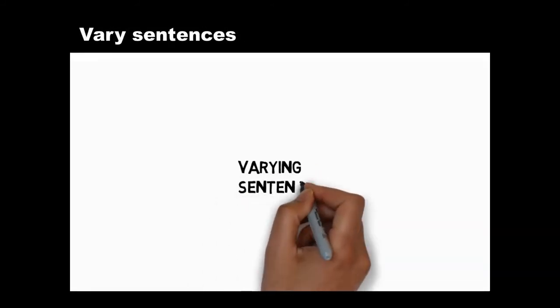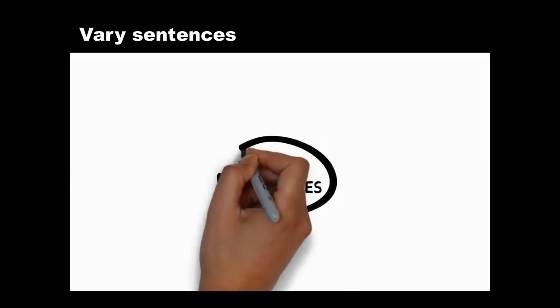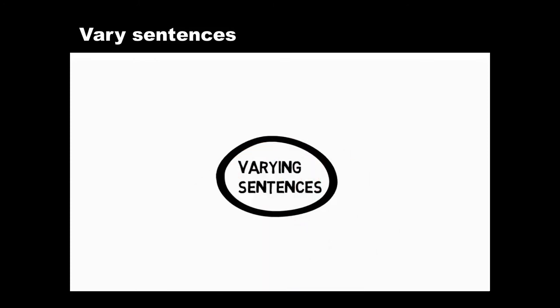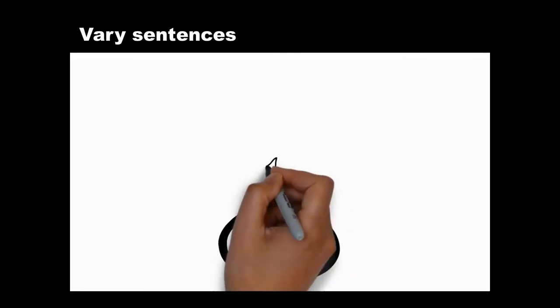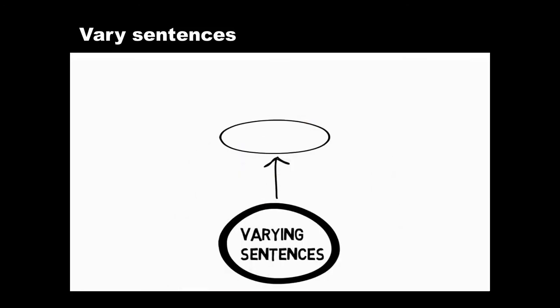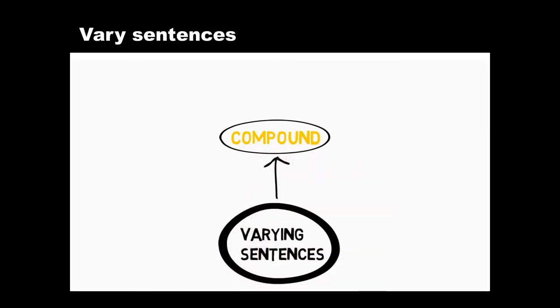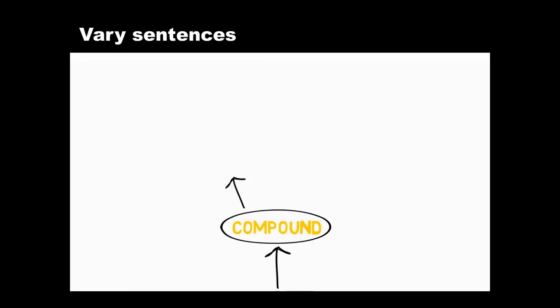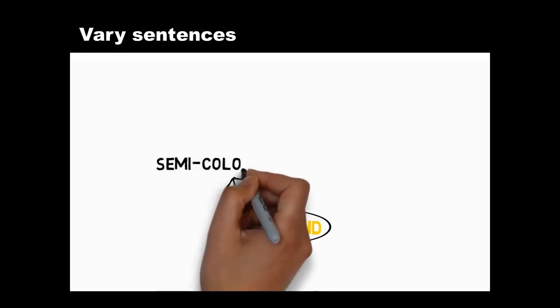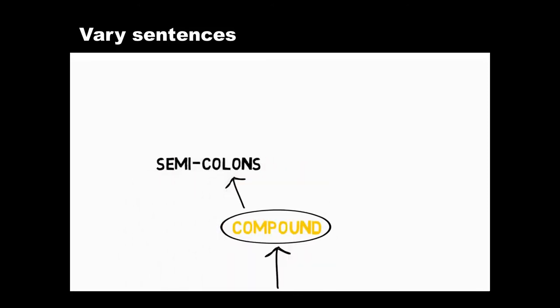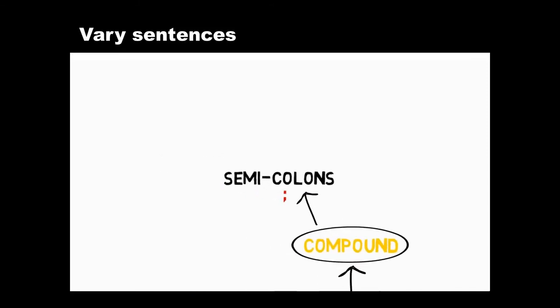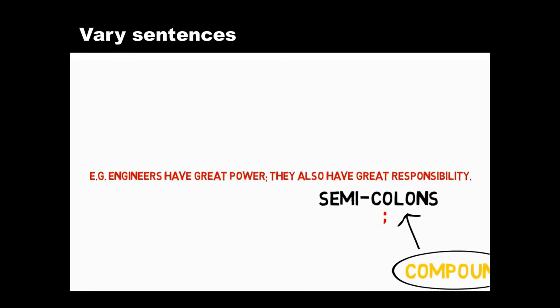So far, we've been looking at simple sentences and how to vary them. Simple sentences have one independent clause and express one main idea. You can also vary your writing by creating compound sentences, which combine more than one main idea. One way is to use semicolons, which work especially well when joining clauses that are similar in structure but have contrasting ideas.